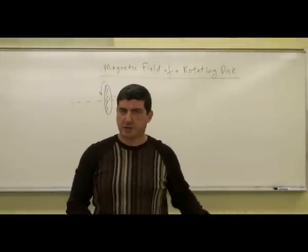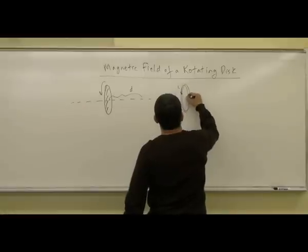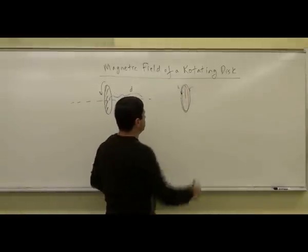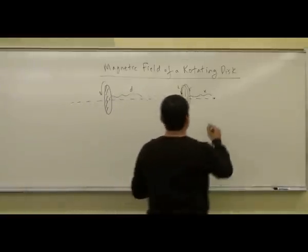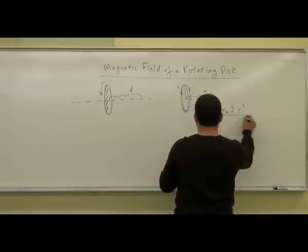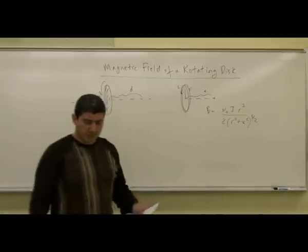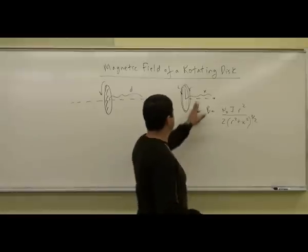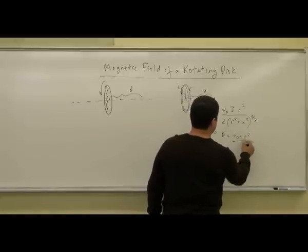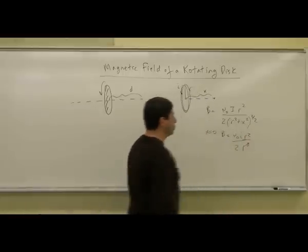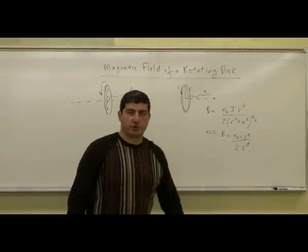We're going to use a result proven earlier: the magnetic field of a current-carrying circular wire with current I and radius R. For a single loop of radius R, the magnetic field along its central axis is B = μ₀IR² / (2(R² + X²)^(3/2)). This makes sense because when X = 0, we get B = μ₀I / 2R, which is the magnetic field of a coil. With N turns, it's Nμ₀I / 2R.